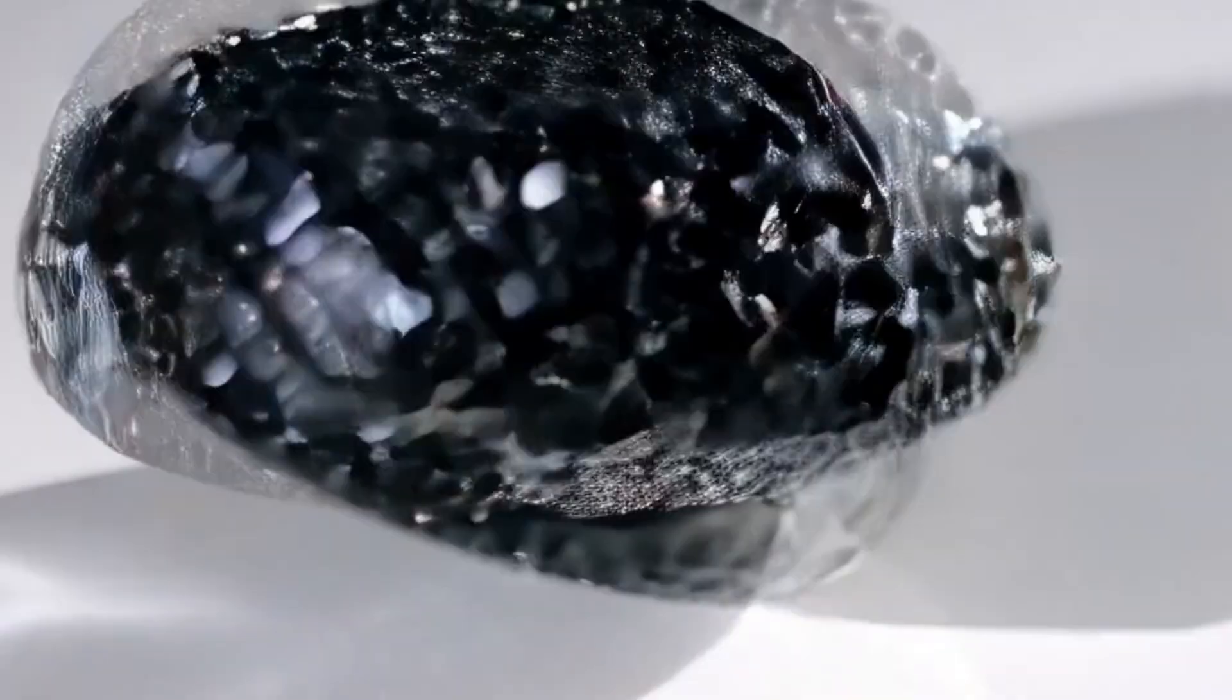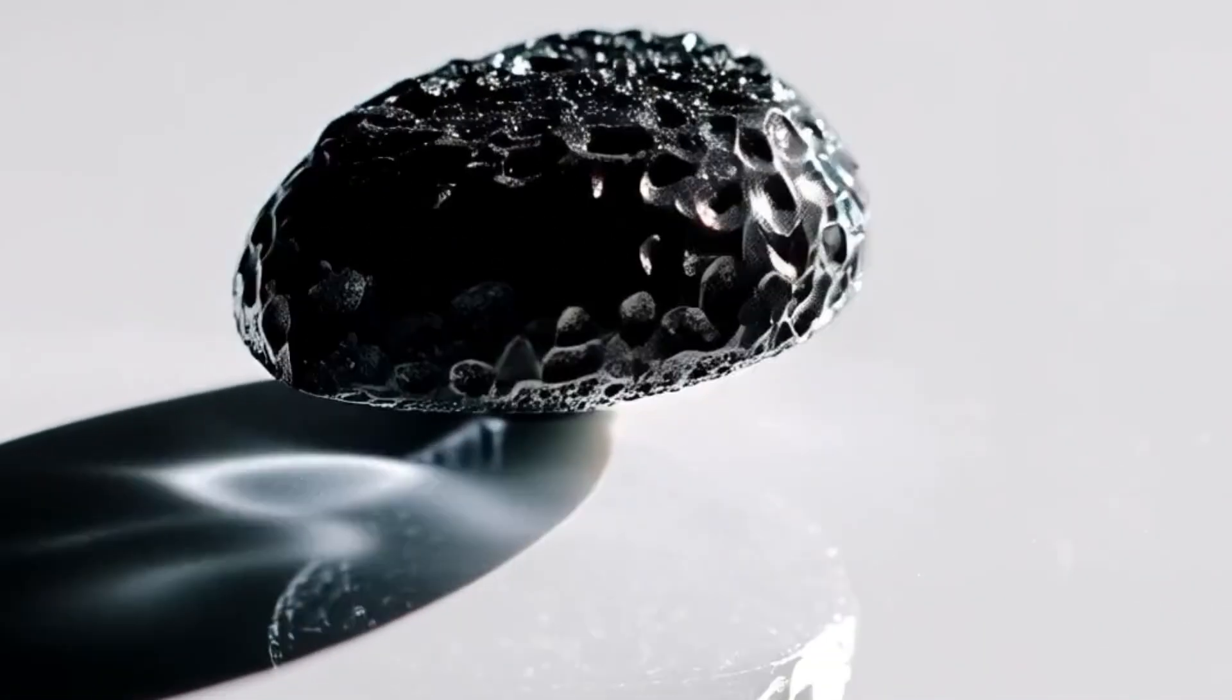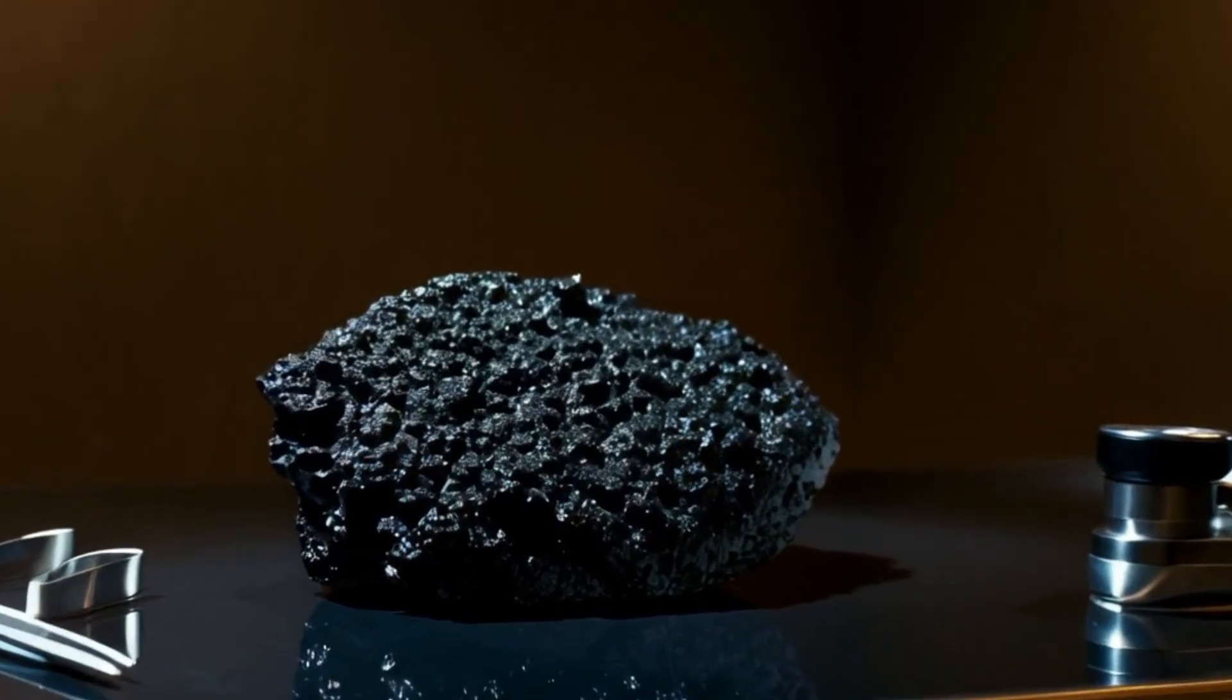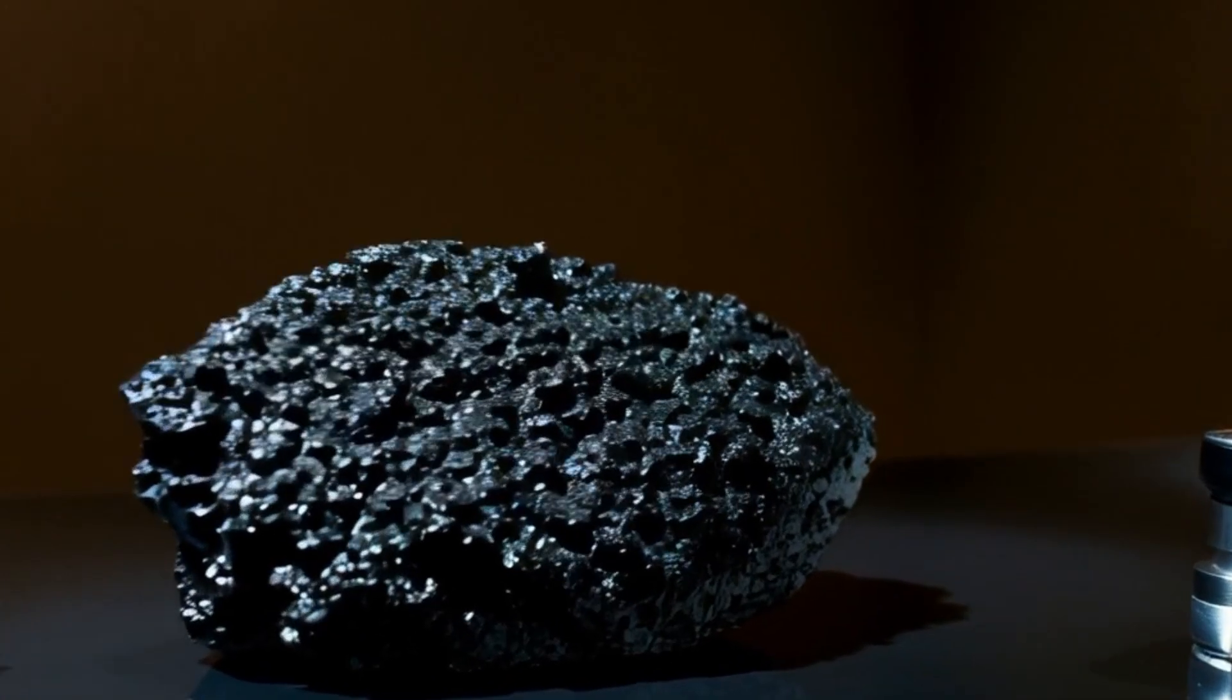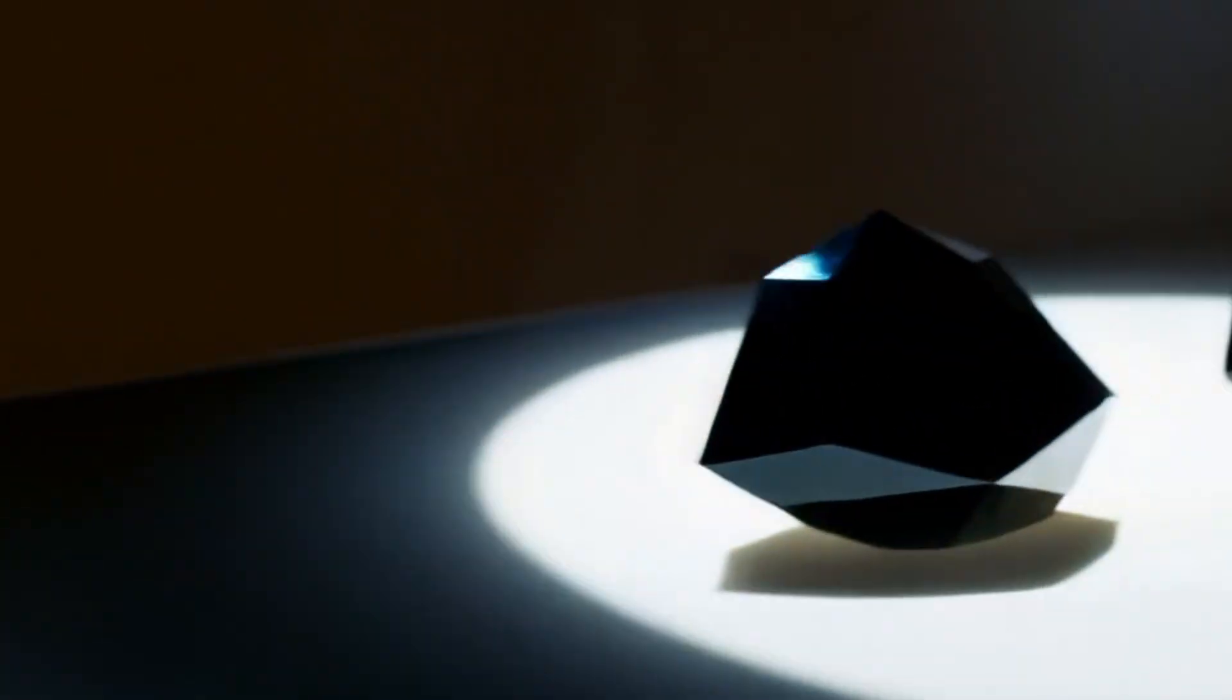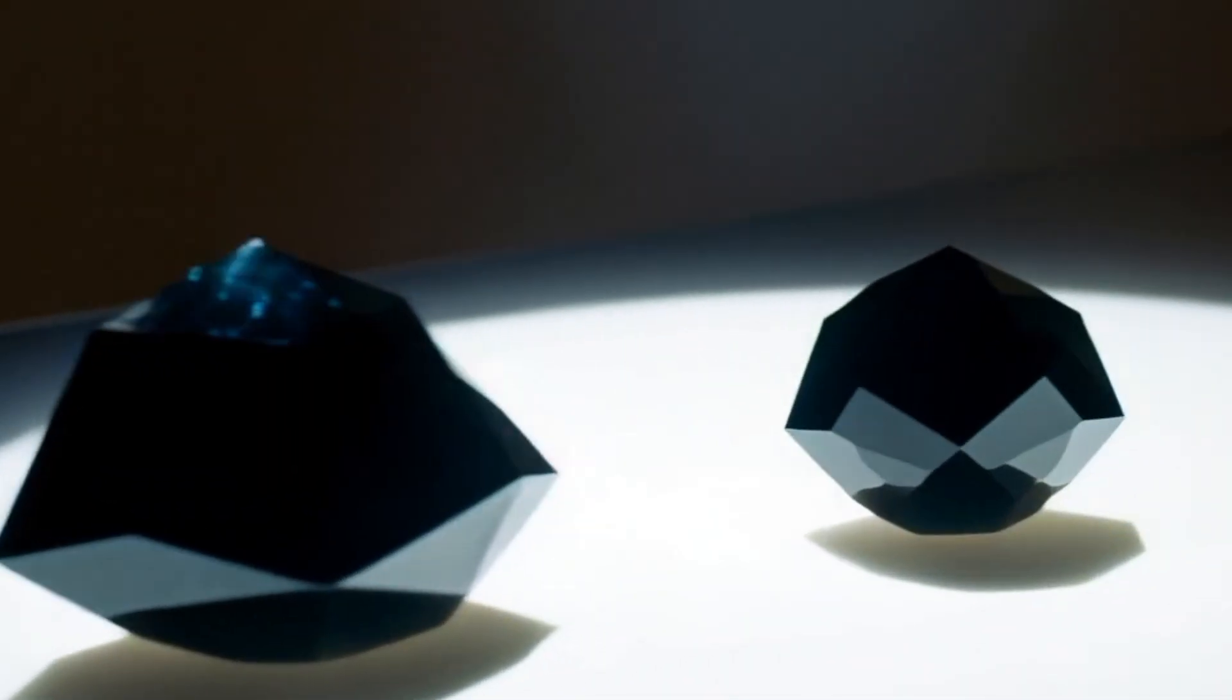Number five, inspect under magnification using a jeweler's loupe or microscope. Real diamonds usually show tiny fractures, inclusions, or a grainy internal texture. Fakes often look flawless with smooth interiors or visible air bubbles, common in glass.